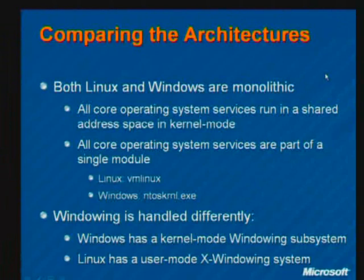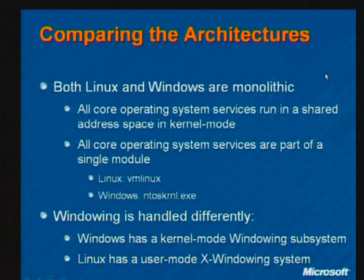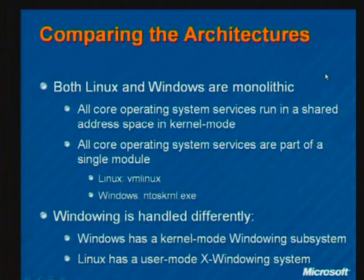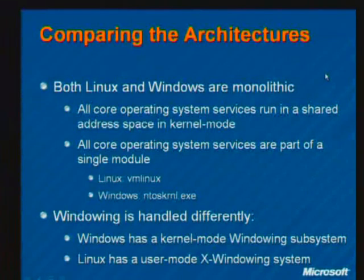Let's take a look at the architectures now. The broadest way you can categorize an operating system is how it divides up its work. Looking at Windows and Linux from that point of view, they're both considered monolithic operating systems — that means all of the core operating system services run in the same address space. The easiest way to understand this is to consider the total opposite: a microkernel operating system.